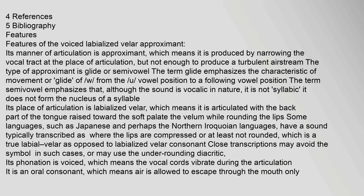Features of the voiced labialized velar approximant: Its manner of articulation is approximant, which means it is produced by narrowing the vocal tract at the place of articulation, but not enough to produce a turbulent airstream. The type of approximant is glide or semivowel.